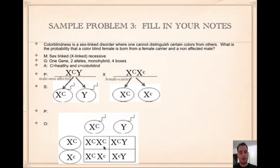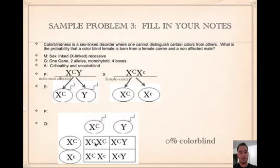Fertilize to get the offspring. For sex-linked traits we use Xs and Ys with the superscript. Looking at the results, 0% are colorblind females. They want to know if there's a colorblind female, so we only look at the females. Both females are healthy — one is healthy and one is a carrier, but she's healthy. None of the girls are colorblind.